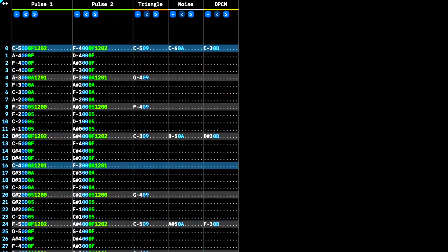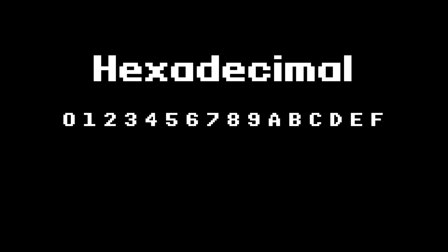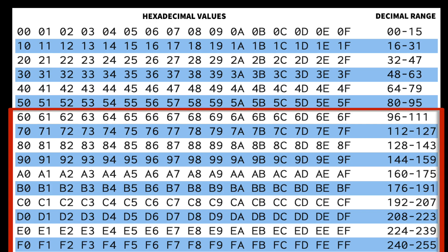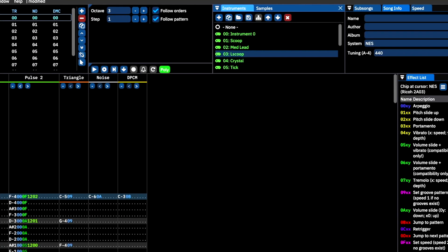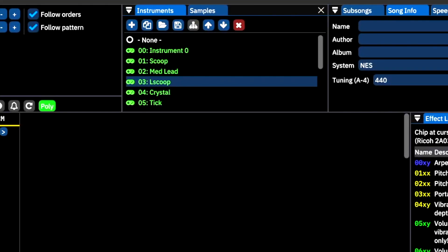You may be noticing a combination of letters and numbers present in the effects, instrument, and volume columns. This is because many trackers use a hexadecimal system — there are 16 characters used to represent all of the possible values for volume, effects, and instrument numbers. This can be a little intimidating at first, but with enough practice you'll get used to it. This system is necessary so that three-figure numbers can be represented with two characters, thus keeping the columns orderly and easy to follow.